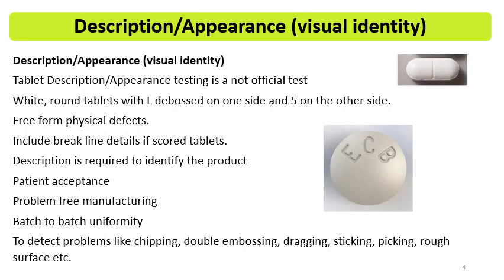First is appearance. Once you start the compression machine and take out the tablets, you perform the initial testing for visual appearance, then weight, hardness, thickness, and disintegration, and then you continue the compression process. Once you start the machine and get the required parameters, these in-process tests are performed. There is a frequency of 30 minutes, or for some tests 1 hour, or for some tests 2 hours, depending on the production or compression run time.